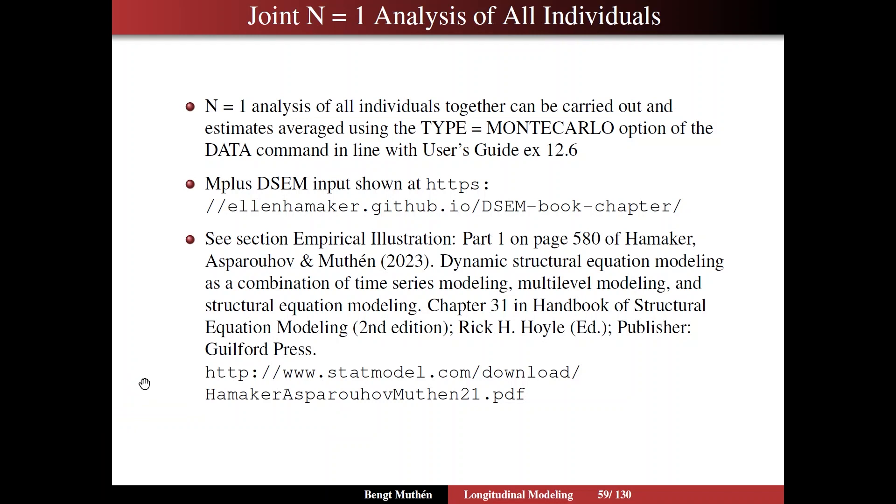I recommend that chapter warmly, and I also recommend exploring N equals 1 analysis, joint N analysis of all individuals, as a precursor to seeing which effects, which parameters should be random, should vary across individuals. You can see the variation across individuals in this fashion.